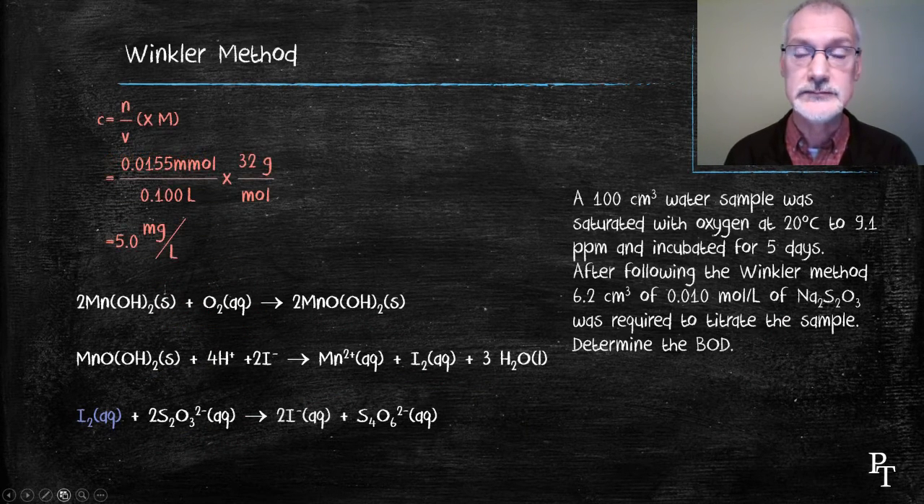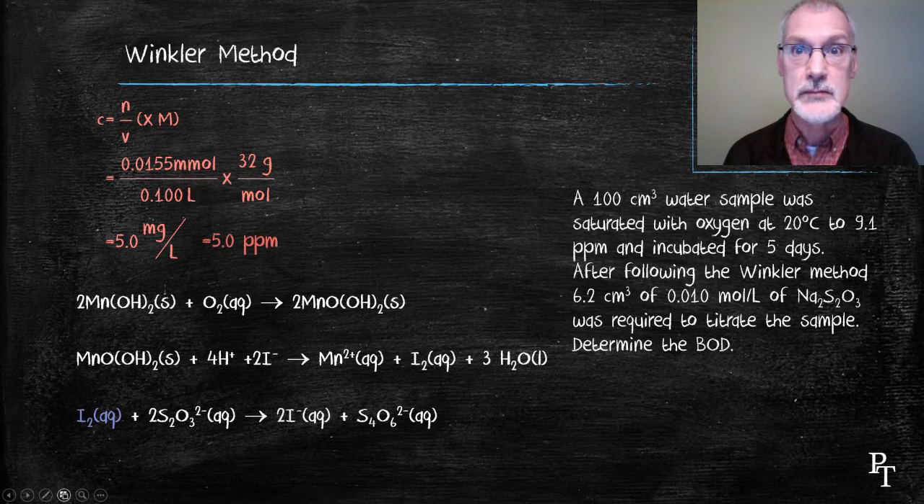I now know the amount of oxygen that was present in millimoles. Let's take that now and work it through to a concentration. So taking that value and the equation for concentration, I can now determine how many millimoles were present and ultimately how many grams were present.